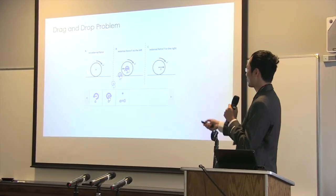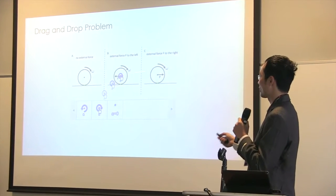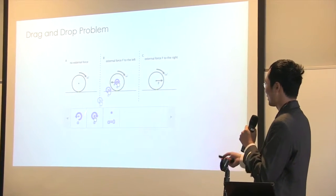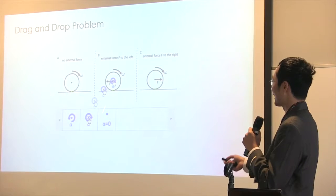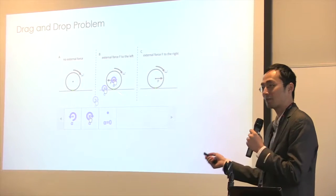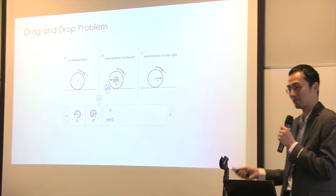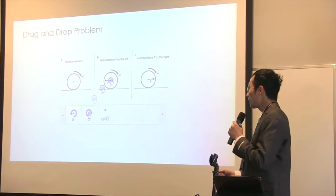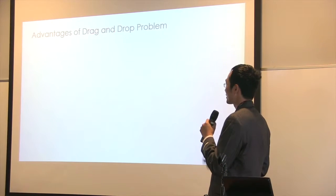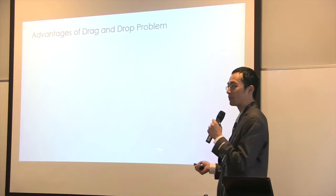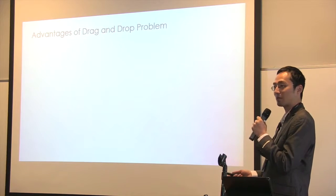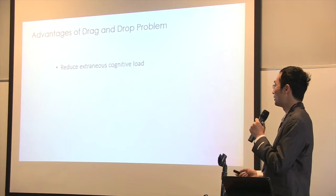In short, you have a background image and you define certain targets on your background image. You have a tray of icons and you can drag one or multiple icons to your targets, and the problem is graded based on that. I think it has certain potential advantages over normal multiple choice and drop-down list problems.